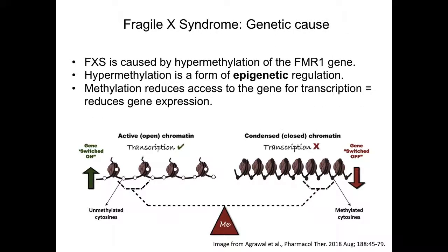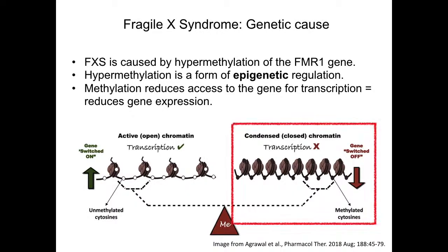Fragile X syndrome is caused by a known genetic mutation in the FMR1 gene that produces hypermethylation. Methylation of DNA is a form of epigenetic regulation, which is regulation of the DNA structure that impacts gene transcription. Methylation of DNA prevents the chromatin from unwinding and prevents transcriptional elements from accessing the DNA. Thus, gene transcription and gene expression is inhibited by methylation.